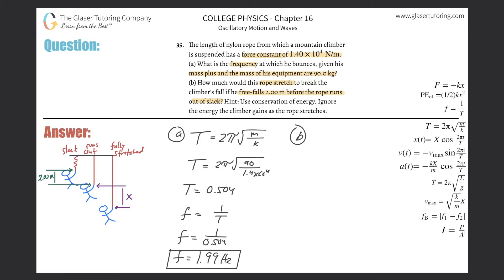He runs out of slack at a particular point after dropping two meters. Once he runs out of slack, he's going to continue to fall further because the nylon rope is going to stretch a bit. That fully stretched position represents the final stage. He is in free fall for two meters until the slack runs out, then the rope begins to stretch a distance x.